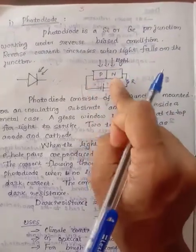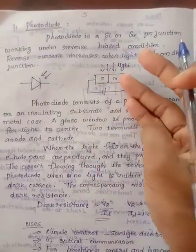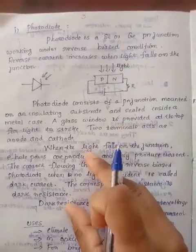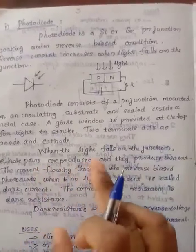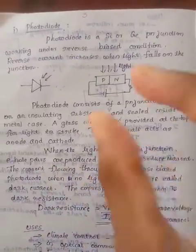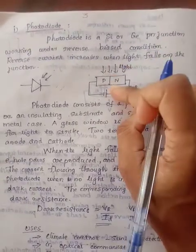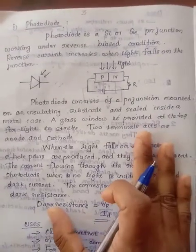Electrons will make a transition to the conduction band, leaving a hole in the valence band. When light falls on the junction, electron-hole pairs are produced, and the movement of electron-hole pairs constitutes current. That is why we measure the resistor across the junction.